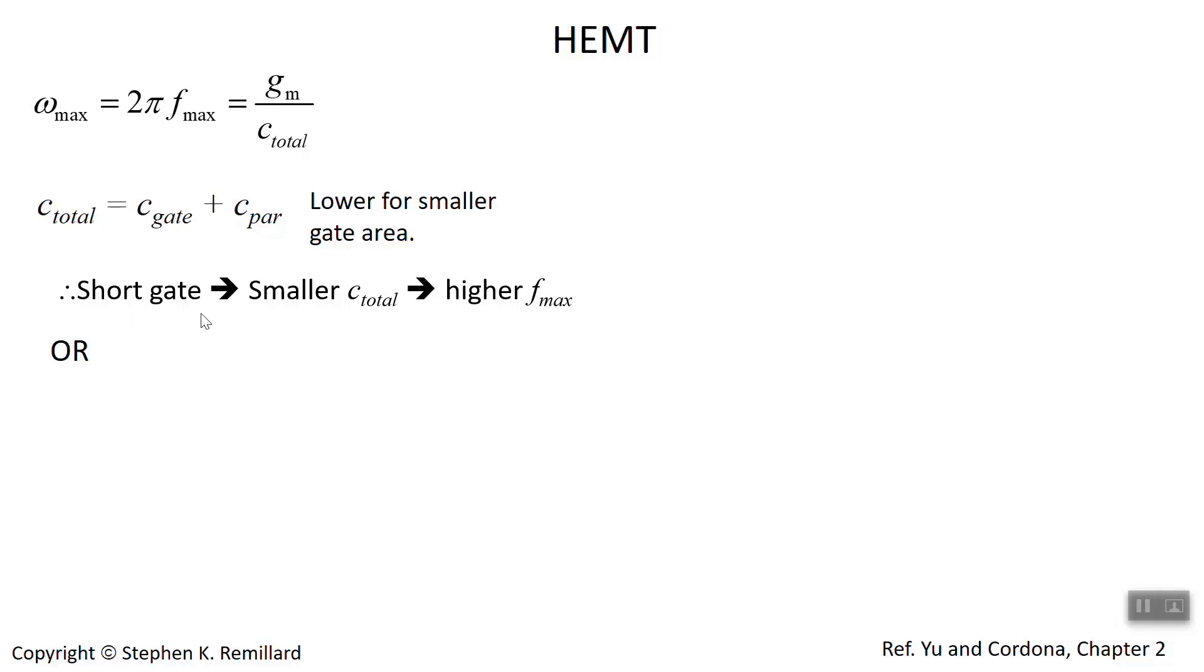By reducing the gate length L, we reduce that and get a higher operating frequency. But you can only do that so much. Gates are already really small. So another way is the high mobility. By having a high mobility in the channel, you have a higher conductance. When you have a higher conductance, you have a higher operating frequency. That's the real reason for having high mobility transistors - to get a large mutual transconductance so we can have a high operating frequency.